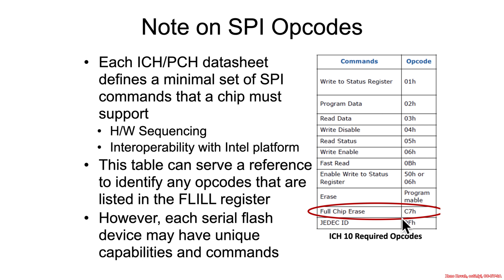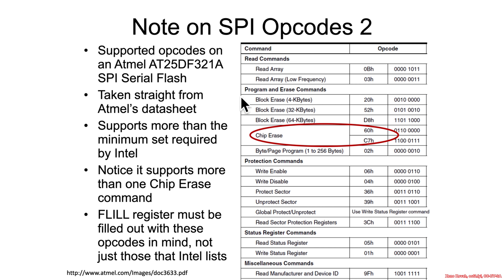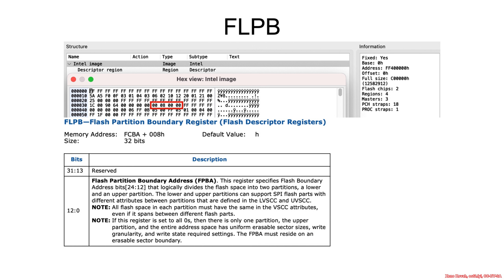You can't block that particular one because this is the required opcodes section from the Intel datasheets. But if you look at a datasheet for a specific SPI flash chip, you can see they might support multiple erase commands. You may be required to support C7 for a particular chip on Intel, but it might also support hex 60. So you might want to let C7 through and block 60 because it could have completely different behavior. It's not actually used on this particular system.